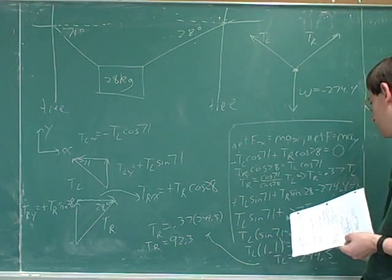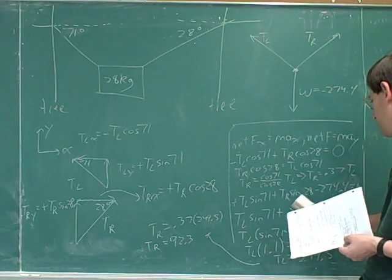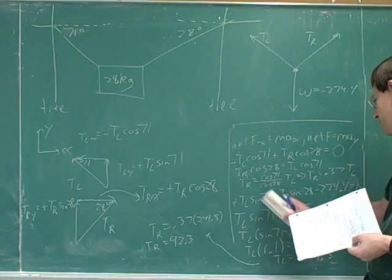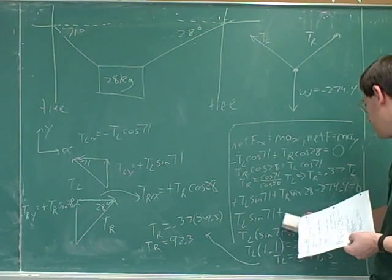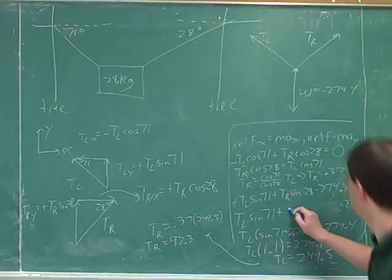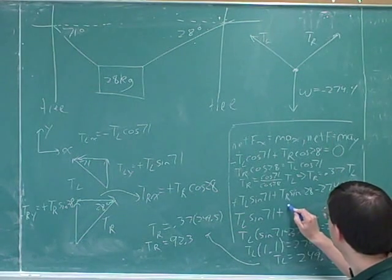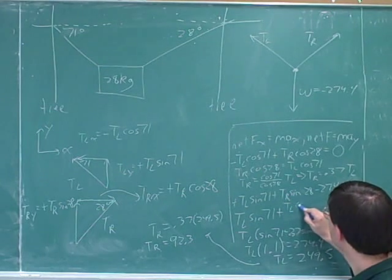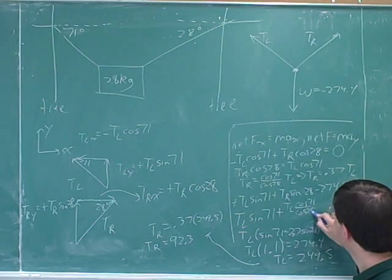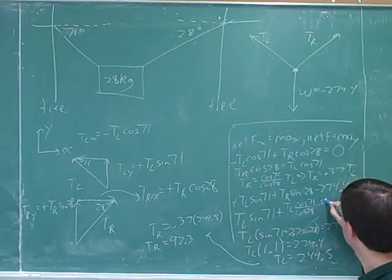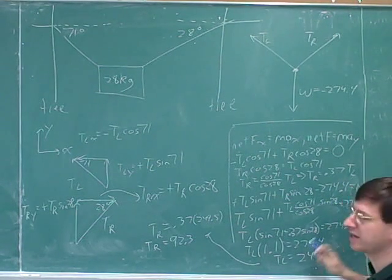If we just carry the cosines around then at this point, so here we're going to plug in for TR. And what are we going to plug in for TR? Well for TR we're going to plug TL times cosine 71 over cosine 28 times sine 28.